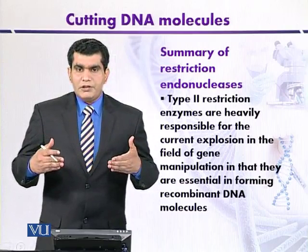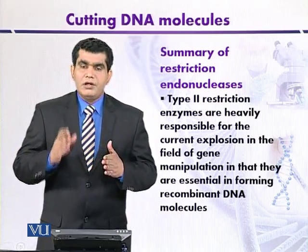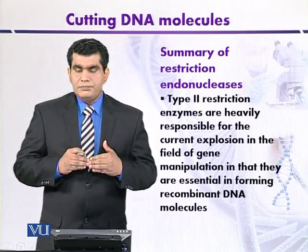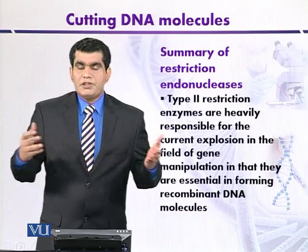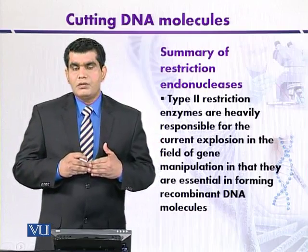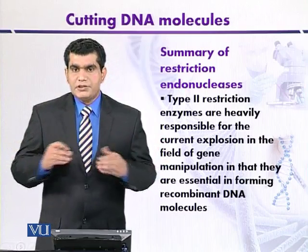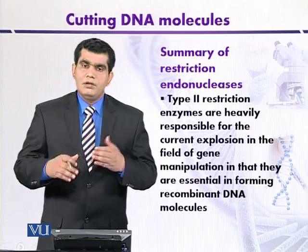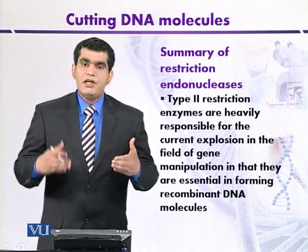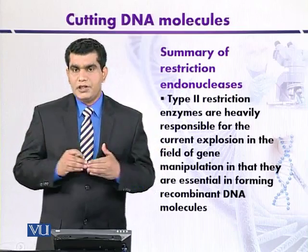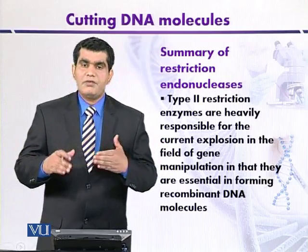We are also aware that when Type 2 restriction enzymes cut DNA fragments, they may produce different types of ends, so different types of fragments are produced. Some DNA fragments have blunt ends. For example, if DNA is digested with the HaeIII restriction enzyme, the DNA fragments that are produced have blunt ends.